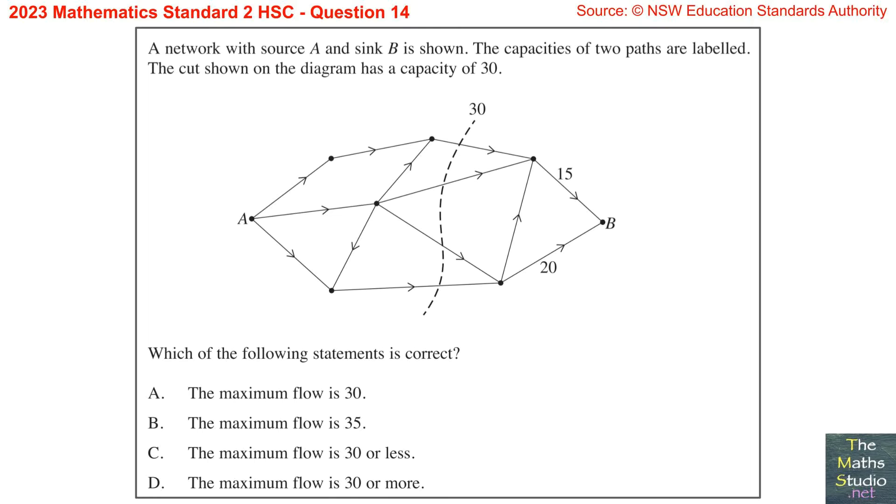Question 14. A network with source A and sink B is shown. The capacities of two paths are labeled. The cut shown on the diagram has a capacity of 30. Which of the following statements is correct?